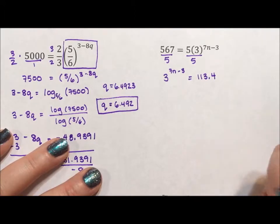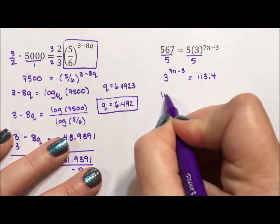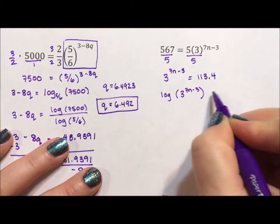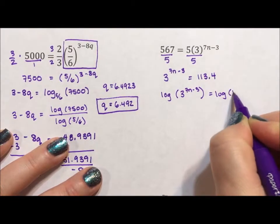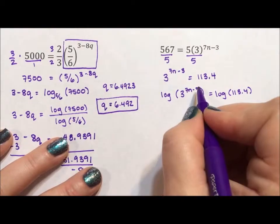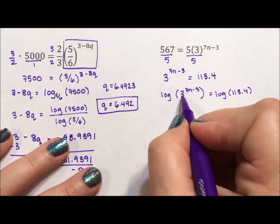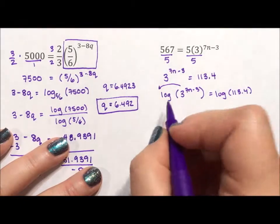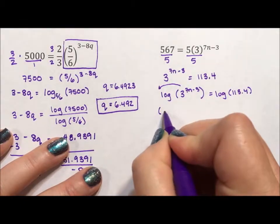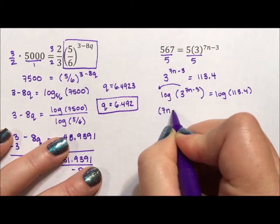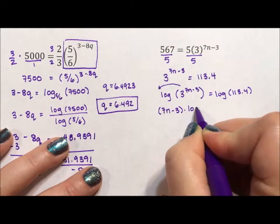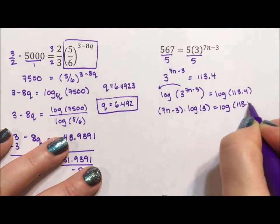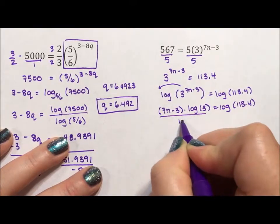Okay what I'm going to do next is I'm going to take the log of both sides. I'm going to say log of 3 to the 7n minus 3 equals log of 113.4. But logs are exponents and there's this great rule that says if the argument has an exponent the exponent can come out front as a multiplier. Now because it's a binomial put it in parentheses. 7n minus 3 times log of 3 equals log of 113.4 and then we'll divide by log of 3.